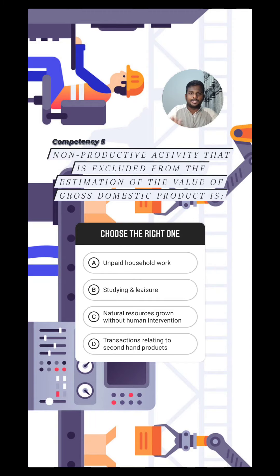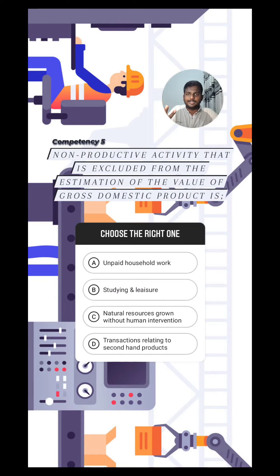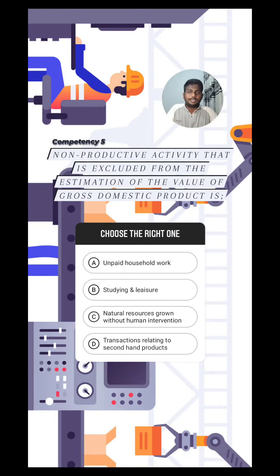Unpaid household work — a housewife, a mum cooking for her children — you can't give a value to that, so you can't add it to GDP. Studying and leisure are productive, but you can't give a value to them. For leisure, when you spend quality time with your family and friends, there's no value for it that can be added to the GDP.